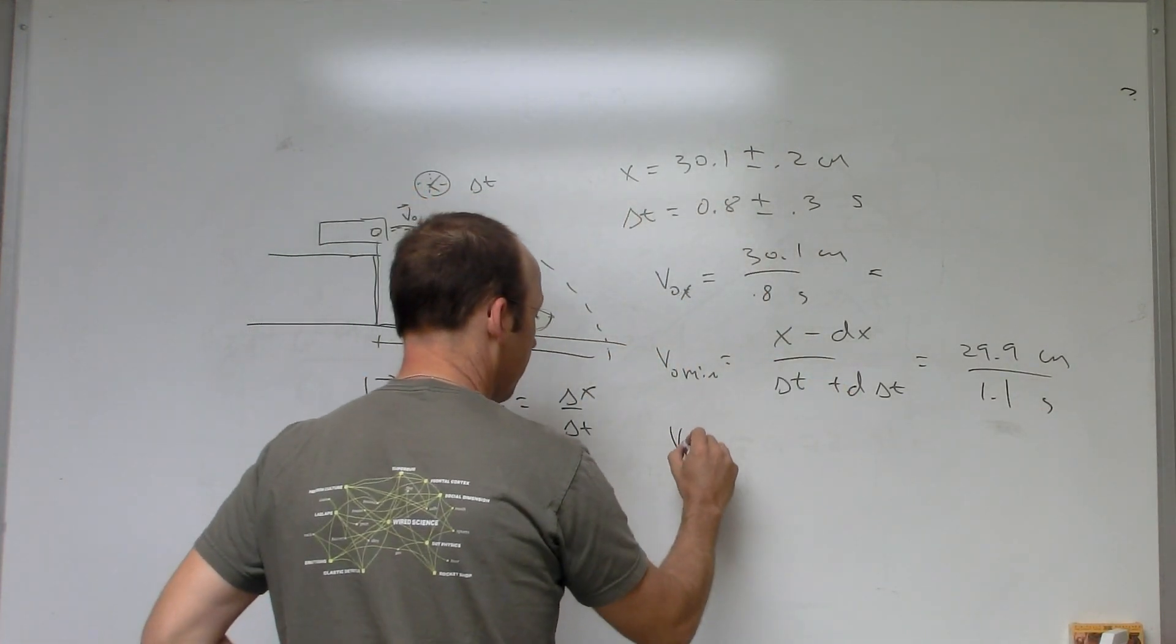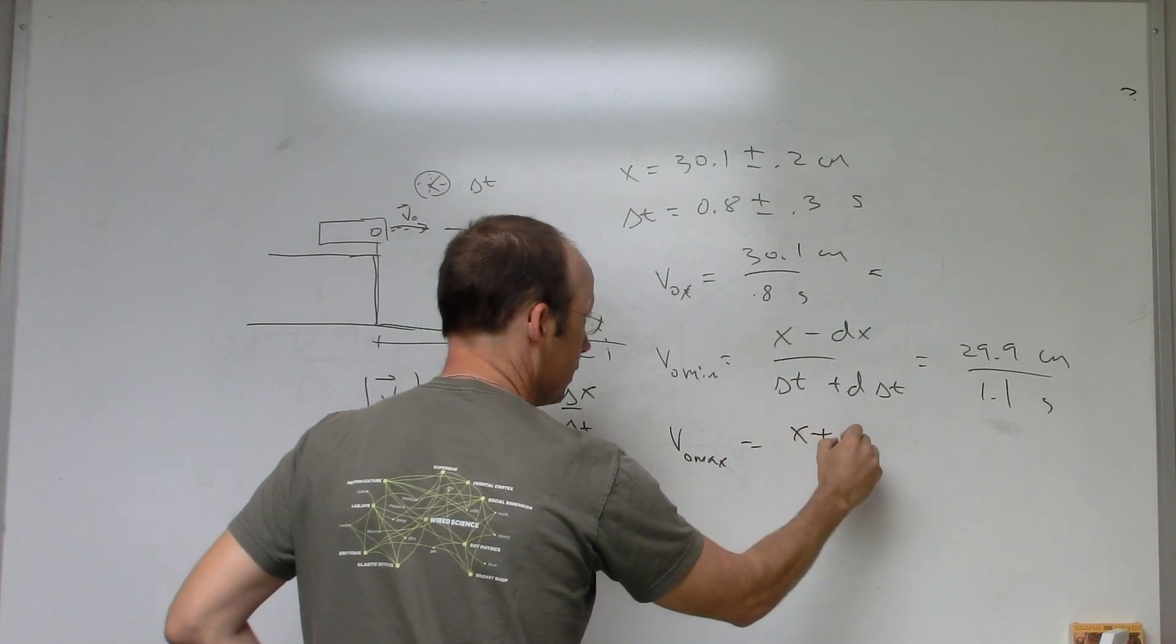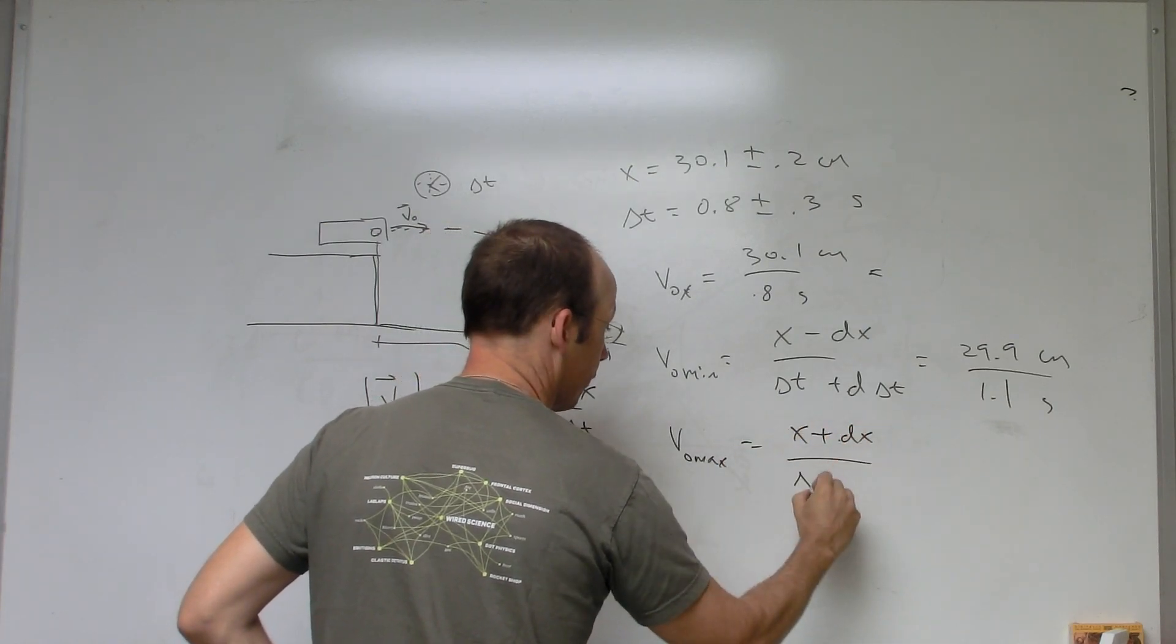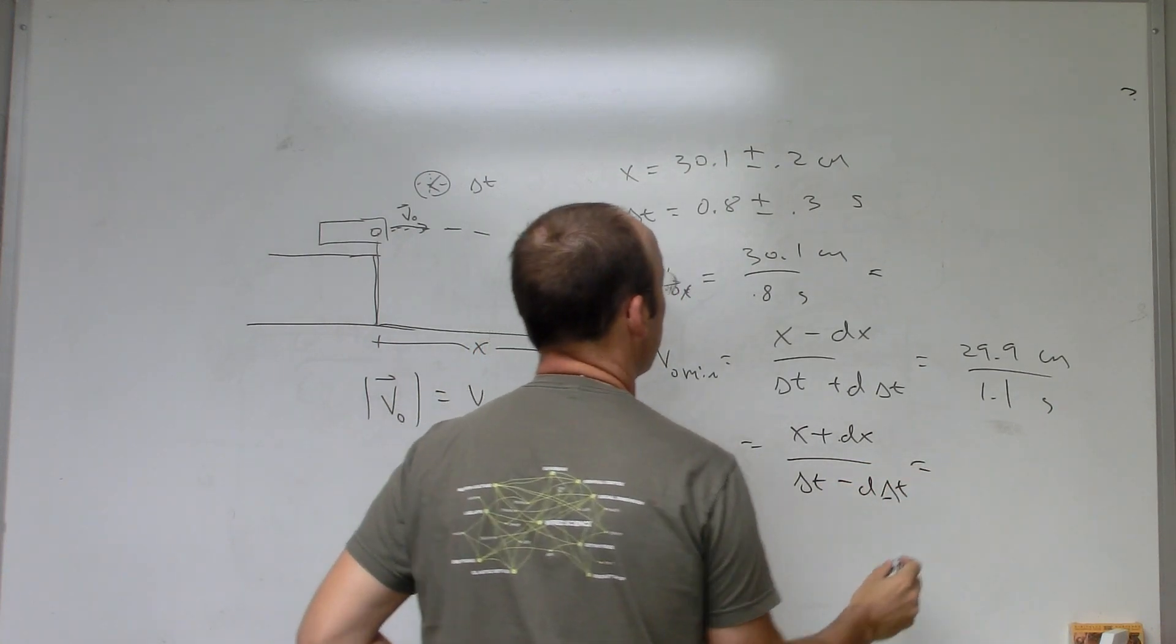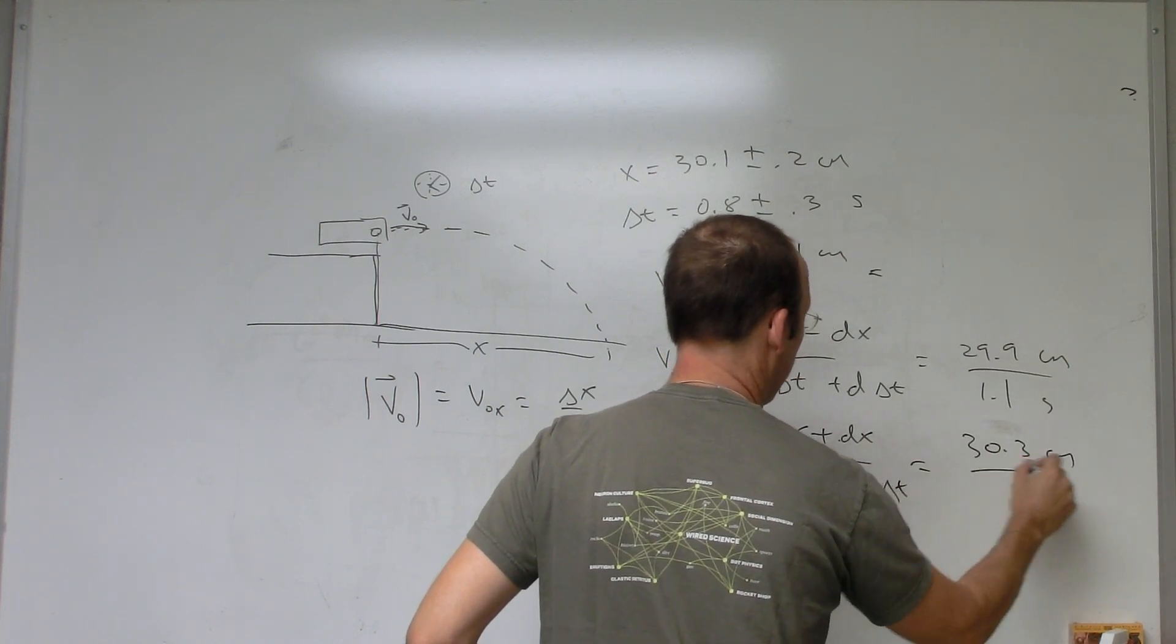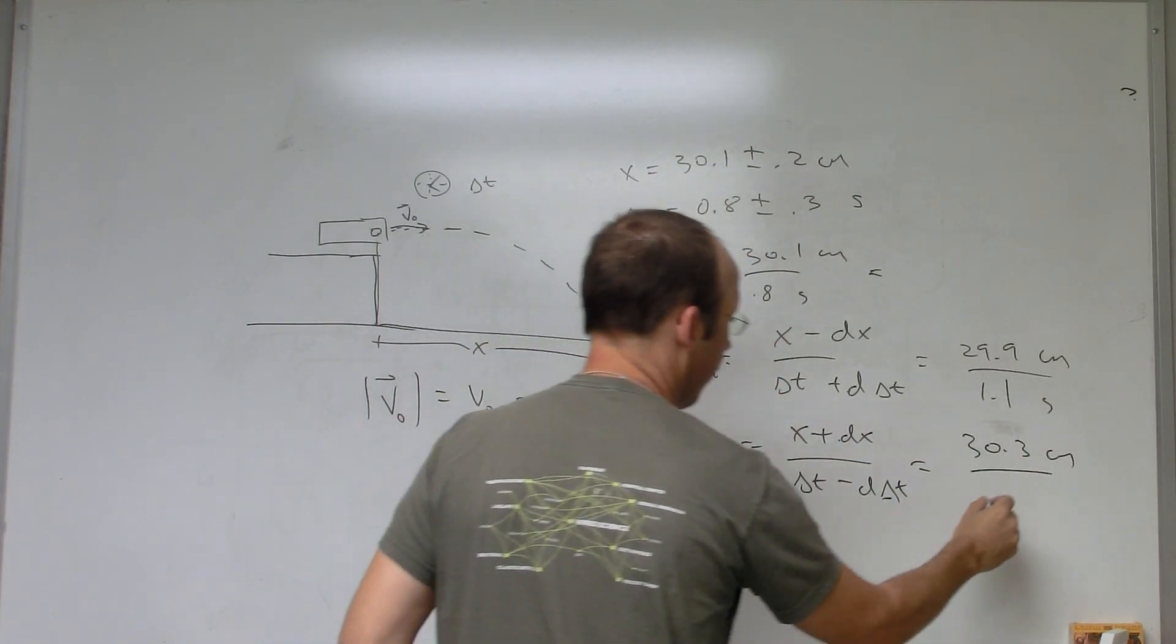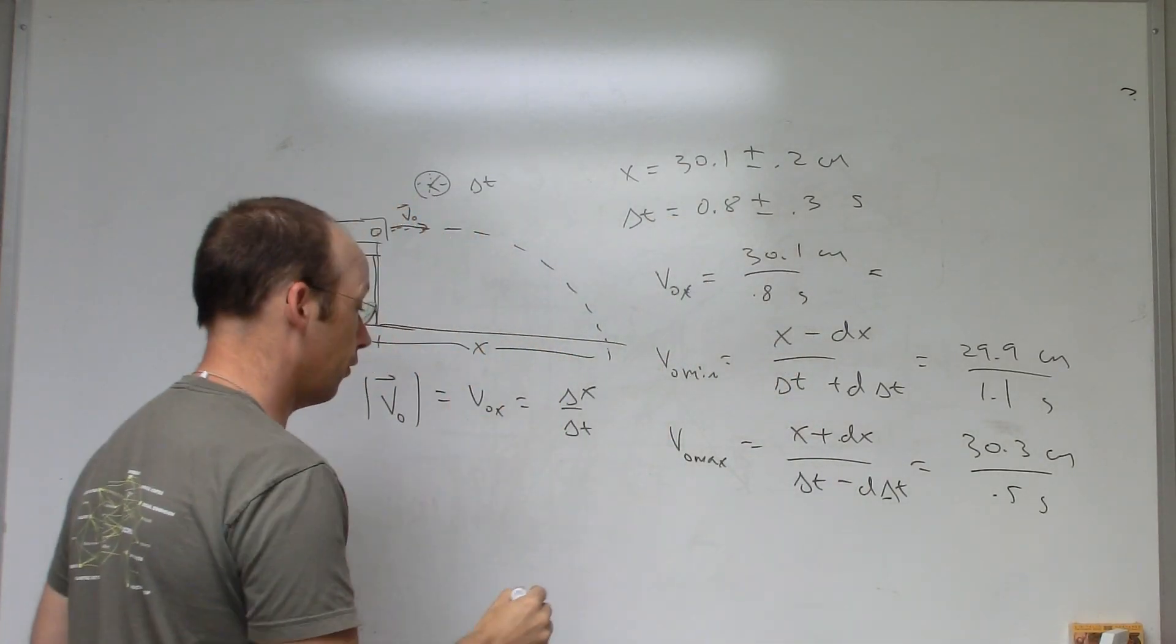For my maximum velocity I'm going to say x plus DX over Delta T minus D Delta T. So that's going to be 30.3 centimeters divided by 0.5 seconds.